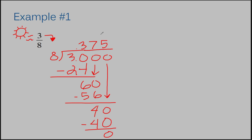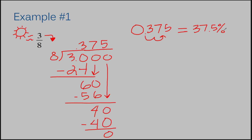Now I also need the percent form of this number. We have two options: take our fraction to a percent, or our decimal to a percent. I think it's easier to take the decimal to a percent. To go from a decimal to a percent, all you do is move your decimal two spaces to the right. So 0.375 equals 37.5 percent — I just moved my decimal over two spaces and added my percent sign.